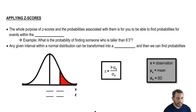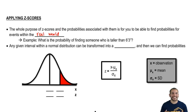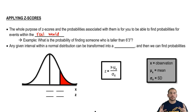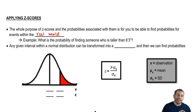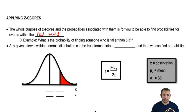The whole purpose of z-scores and probabilities associated with them is for you to be able to find probabilities for events within the real world — things like heights, weights, GPAs, numbers that are associated with real world events. For example, what is the probability of finding someone who's taller than 6'3"? You want to tie that 6'3" to a z-score and then use the z-score to find the probability associated with it.